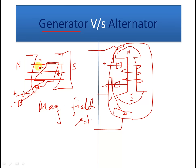So the key construction difference is: in a generator the field is stationary while the conductor responsible for output is rotating. In an alternator the field is rotating while the output conductors are stationary, fixed to the stator.